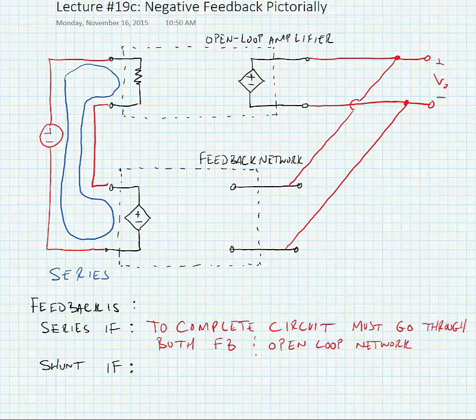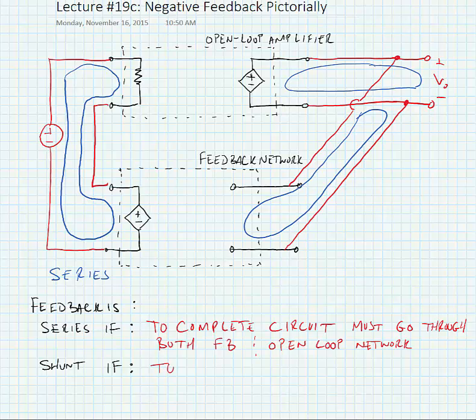At the output we can see that in order to complete the circuit we can either go through the open loop network or we can go through the feedback network. And so a network is shunt if to complete the circuit we can go through either network.